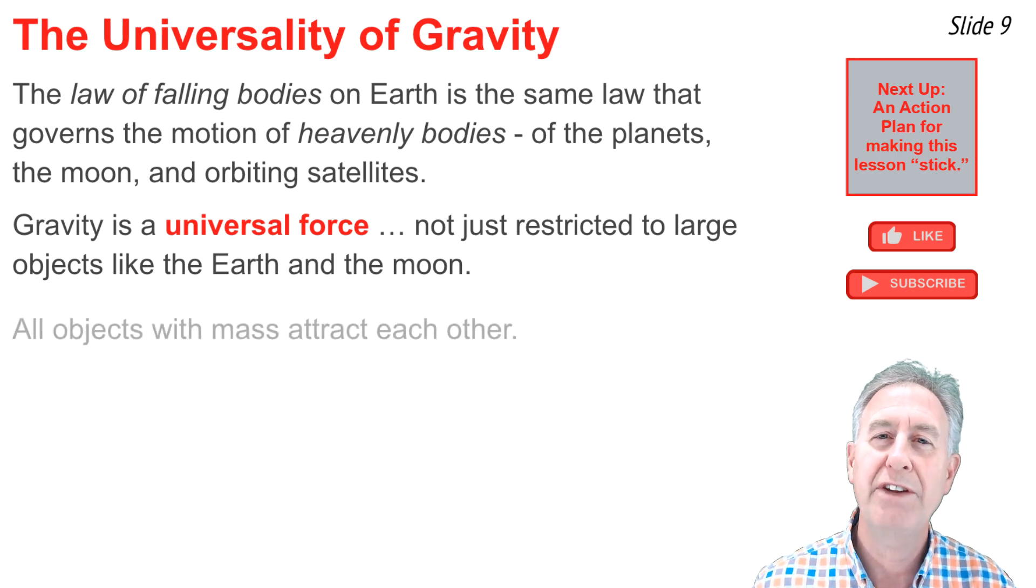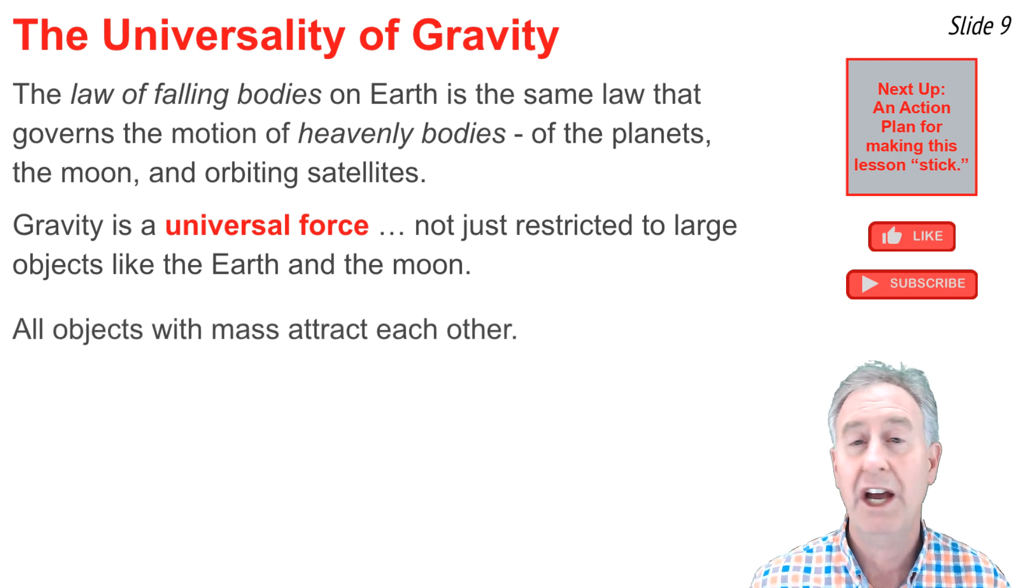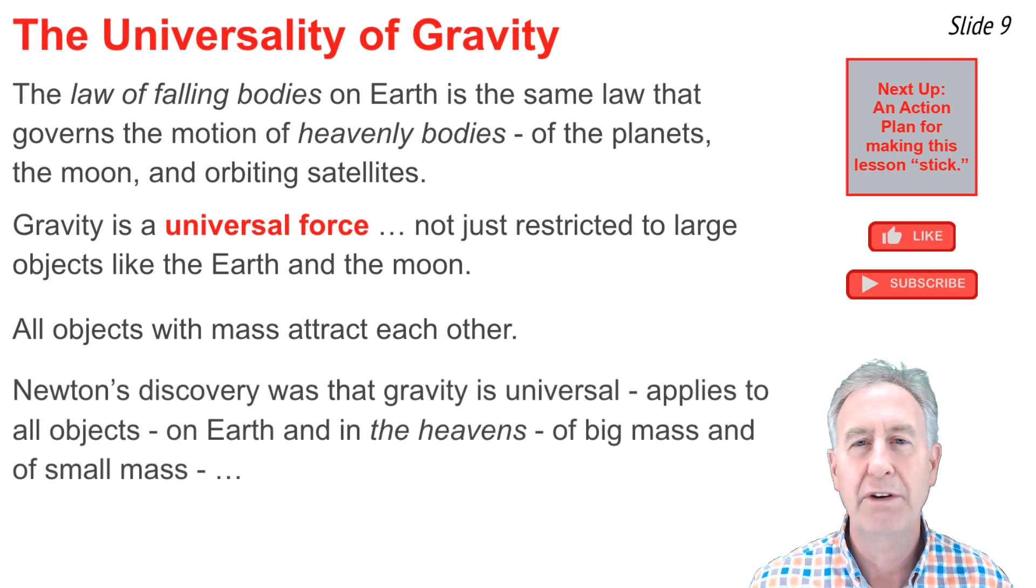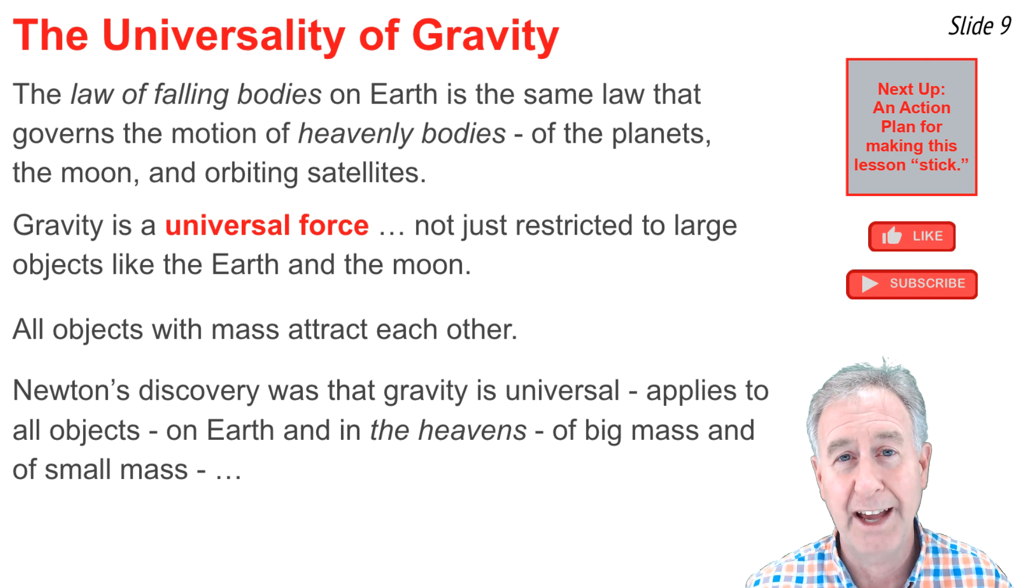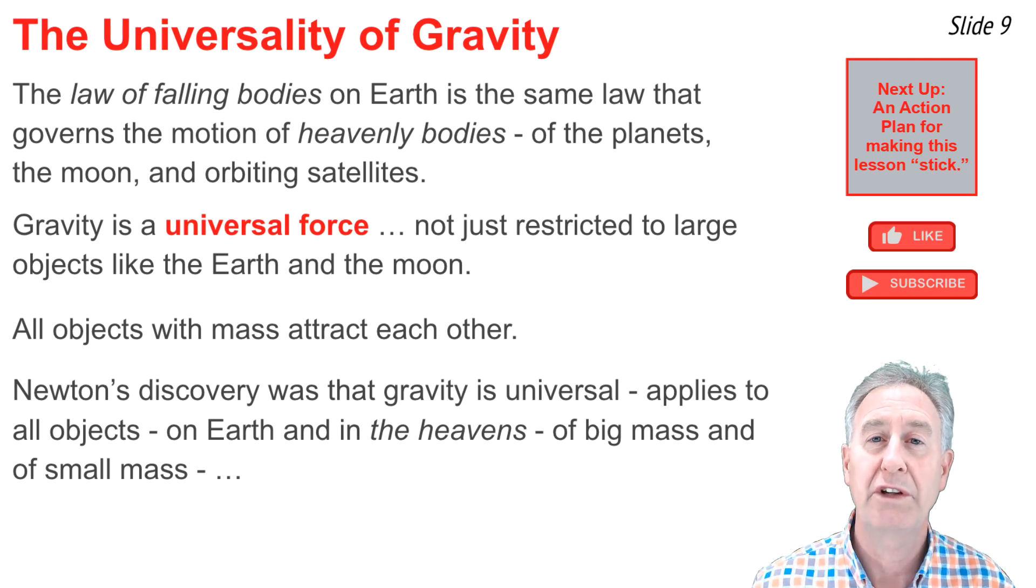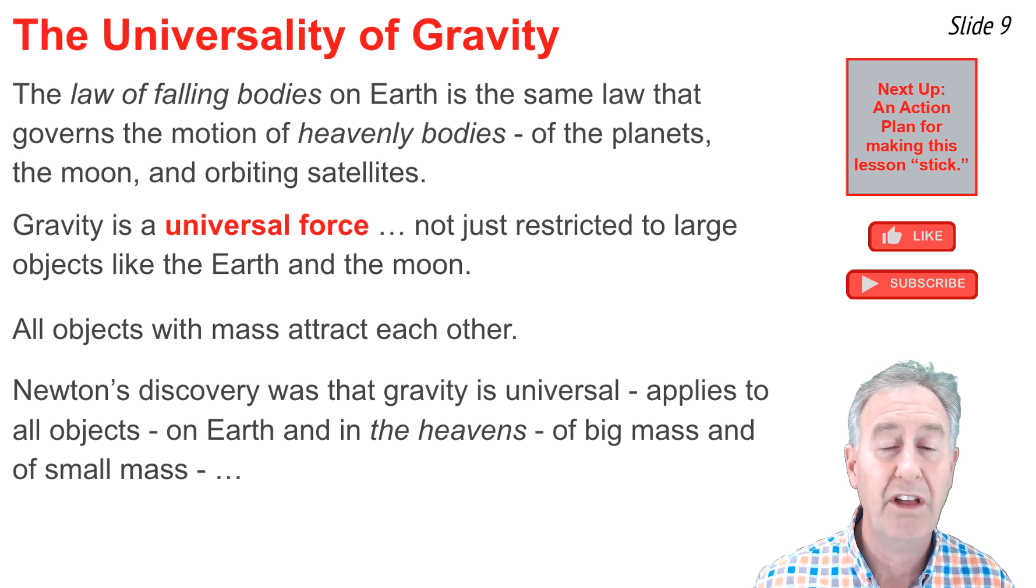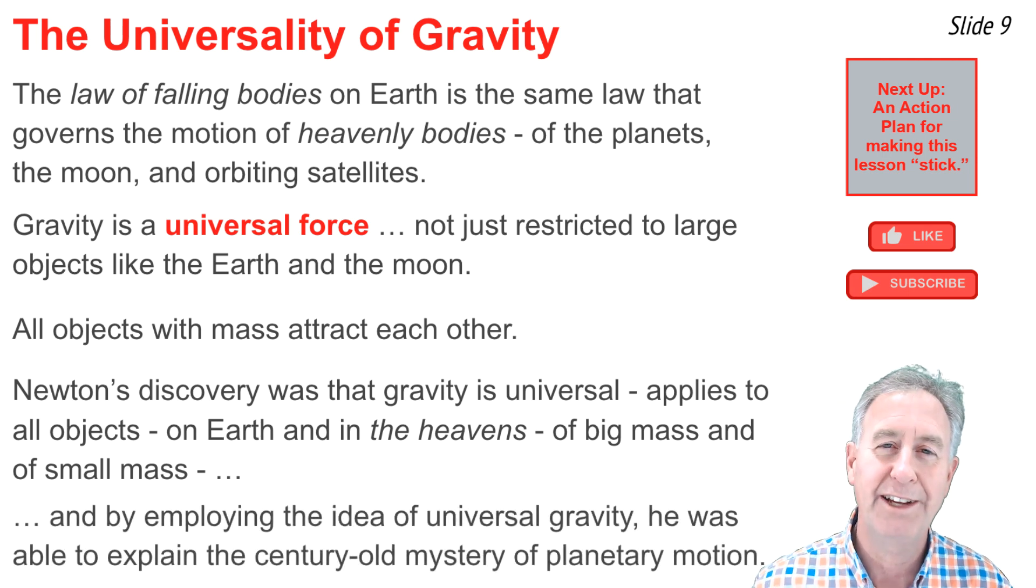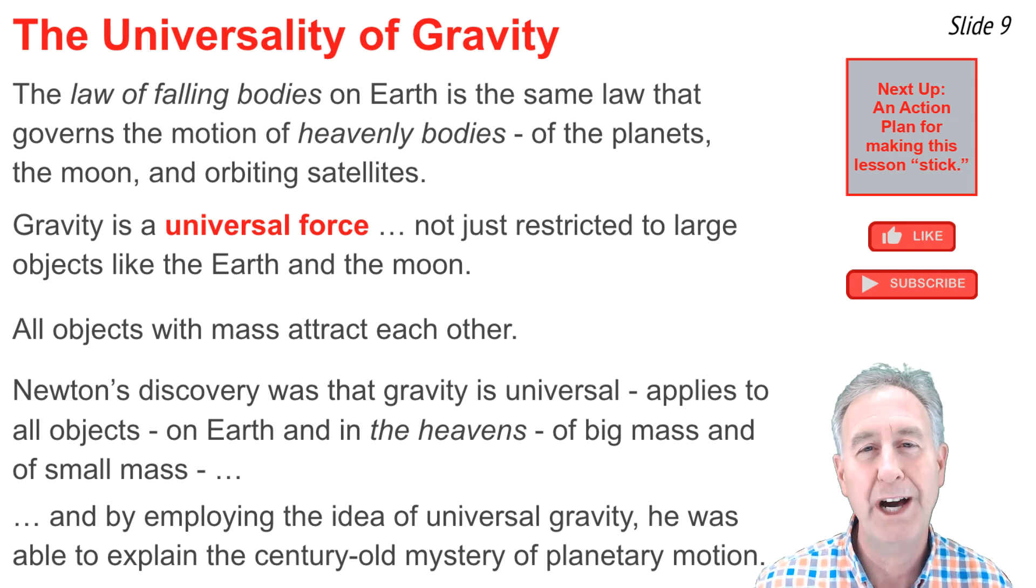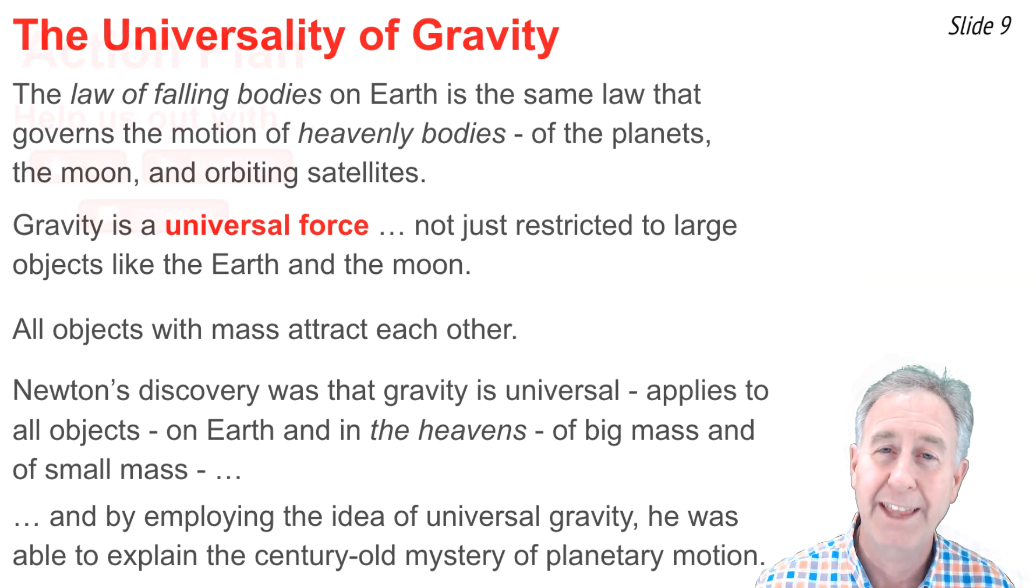Universal gravitation asserts that all objects with mass attract one another. Newton did not discover gravity. He's far too late for that. Instead, Newton discovered that gravity was universal, that it applies to all objects on earth, off the earth, of big mass, of small mass. And by employing the idea of universal gravitation, Newton was able to explain the century-old mystery of why planets orbit in the way that they do.